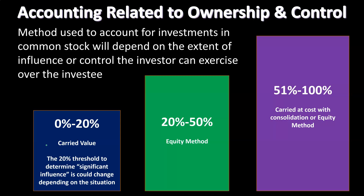Under 20%, we're going to use the carried value method. The 51% threshold is more of a concrete rule — obviously if someone has more than 50% of the vote on anything, they have a controlling vote. There's not much question about that generally.